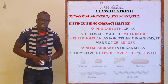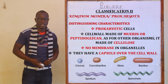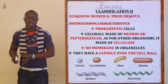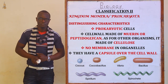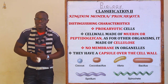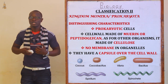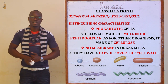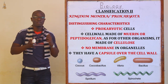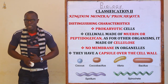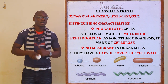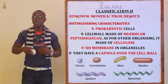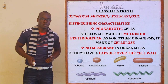Now let's look at the distinguishing characteristics — the peculiar characteristics found only in Kingdom Monera. First, these are prokaryotic cells, meaning the nucleus is not bound by a nuclear membrane and floats freely in the cytoplasm. Second, the cell wall is made up of murein or peptidoglycan material, found only in these organisms. Third, their organelles have no membranes. Lastly, they have a capsule over the cell wall.